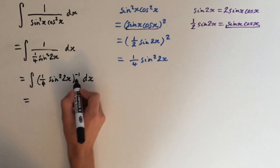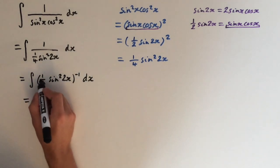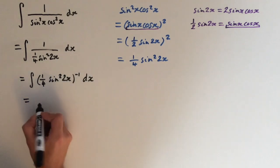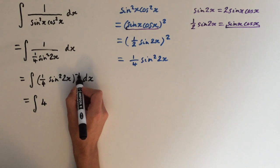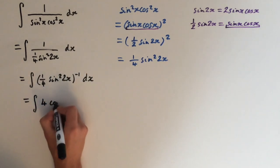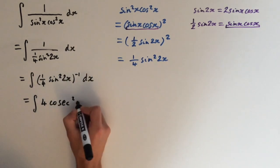So now we can just multiply the power into the bracket. So a quarter to the power of minus 1 is just 4, and sine to power of minus 1 is cosec. So this becomes cosec squared 2x.